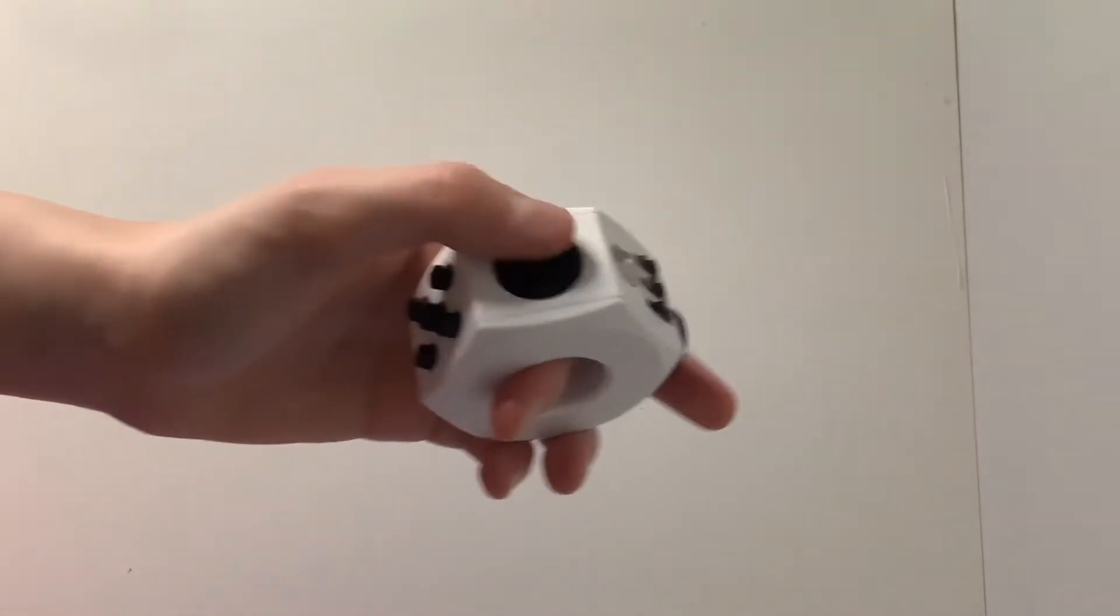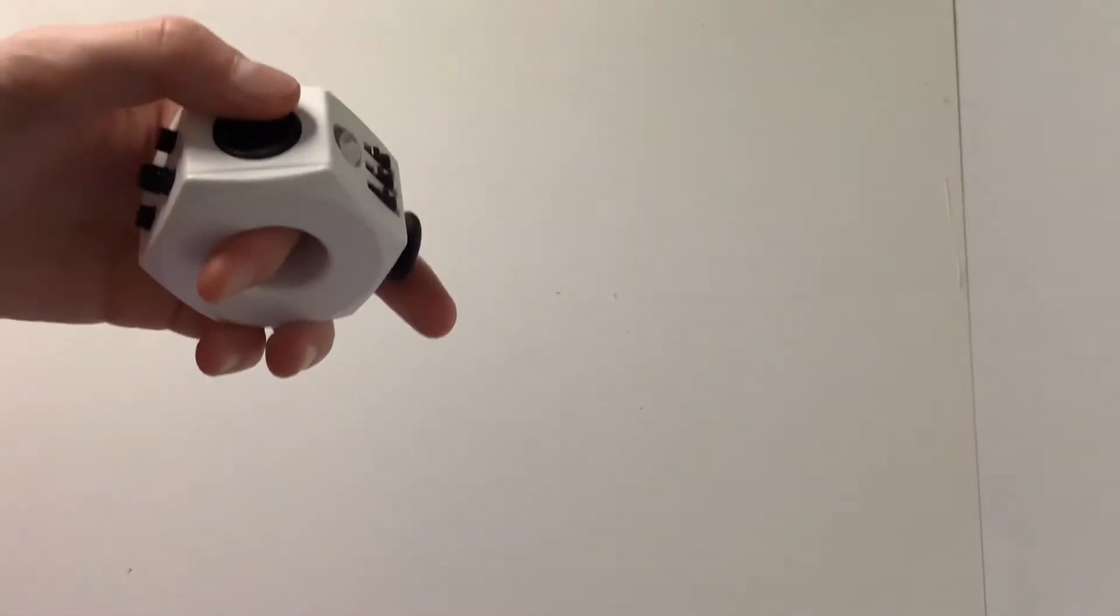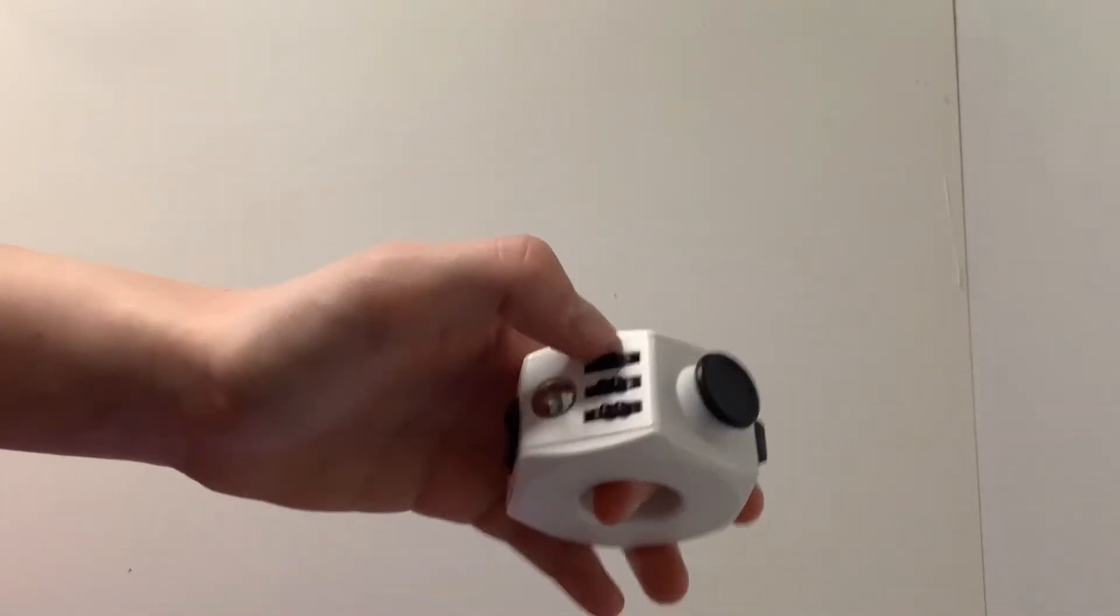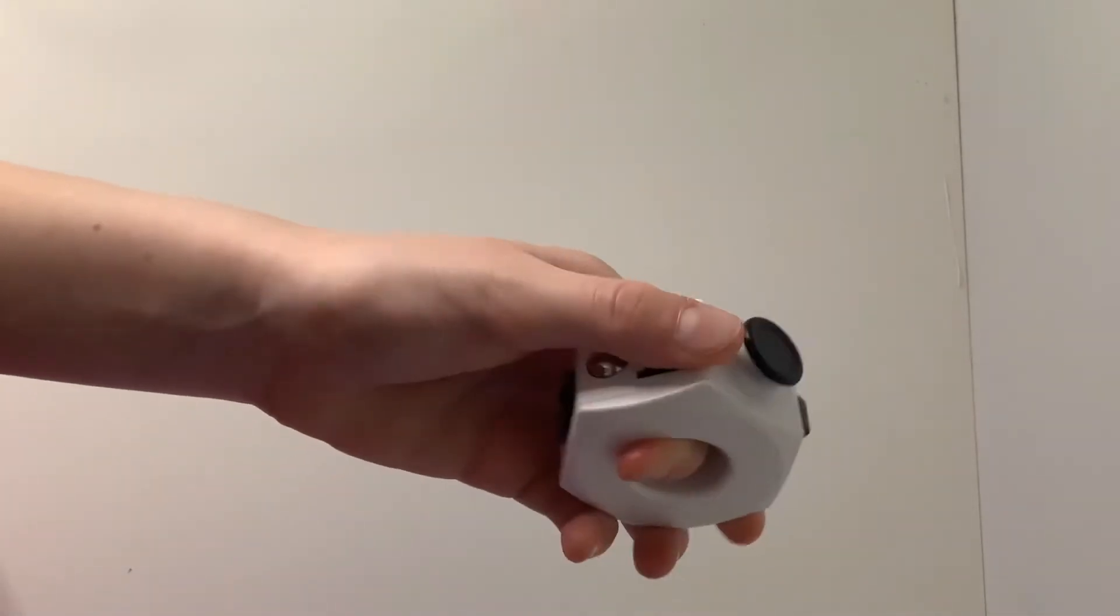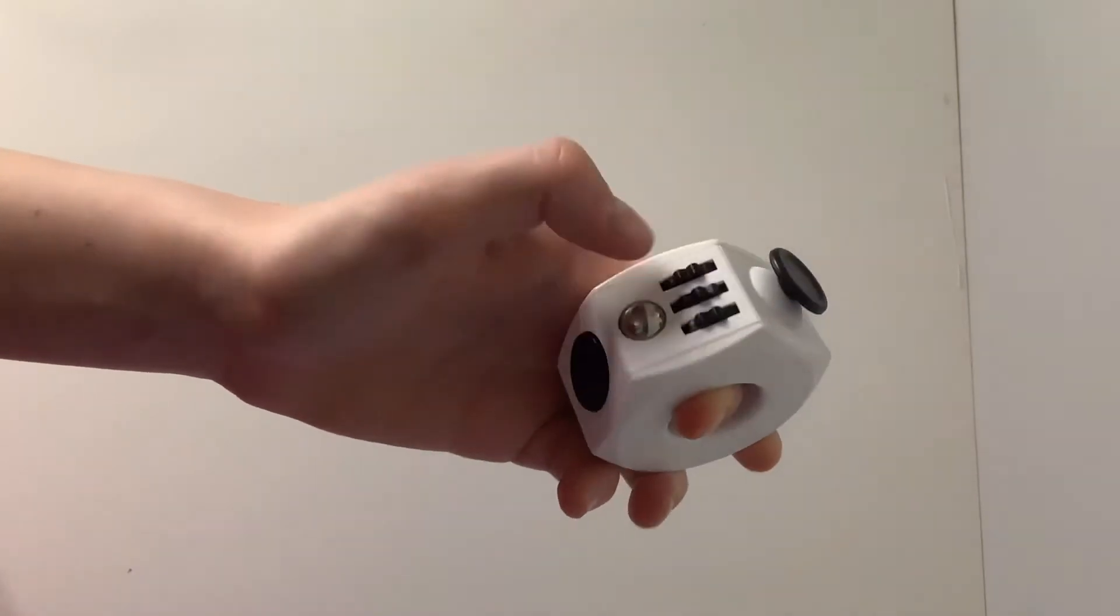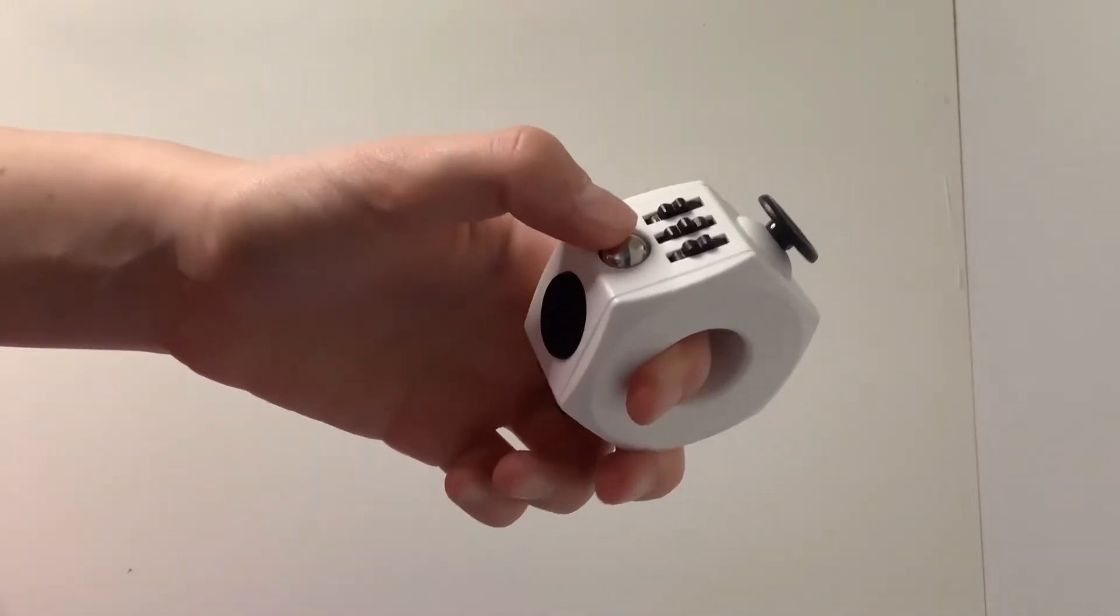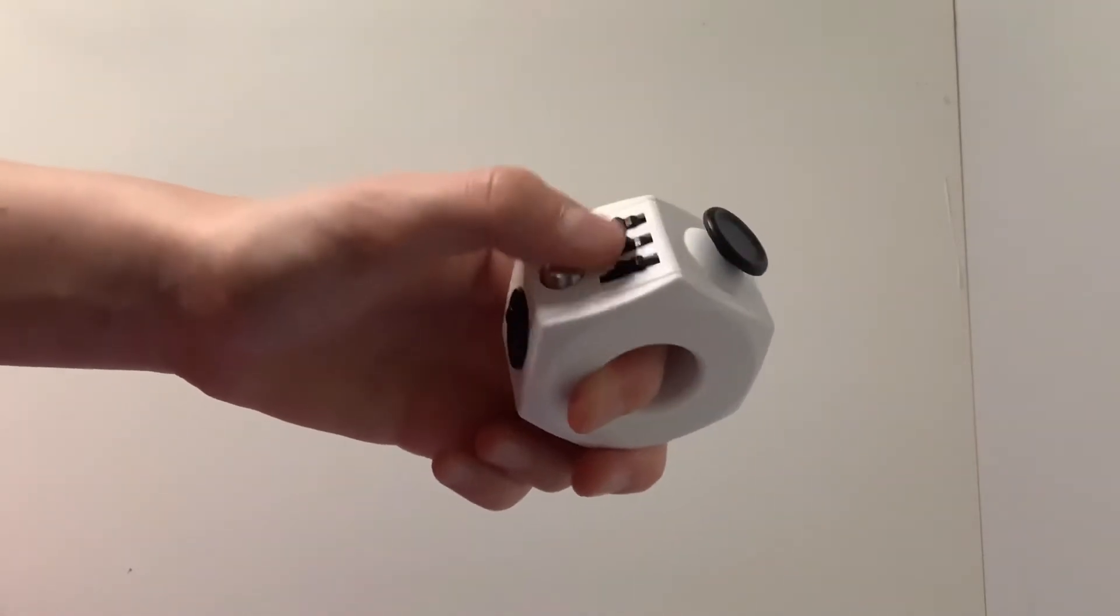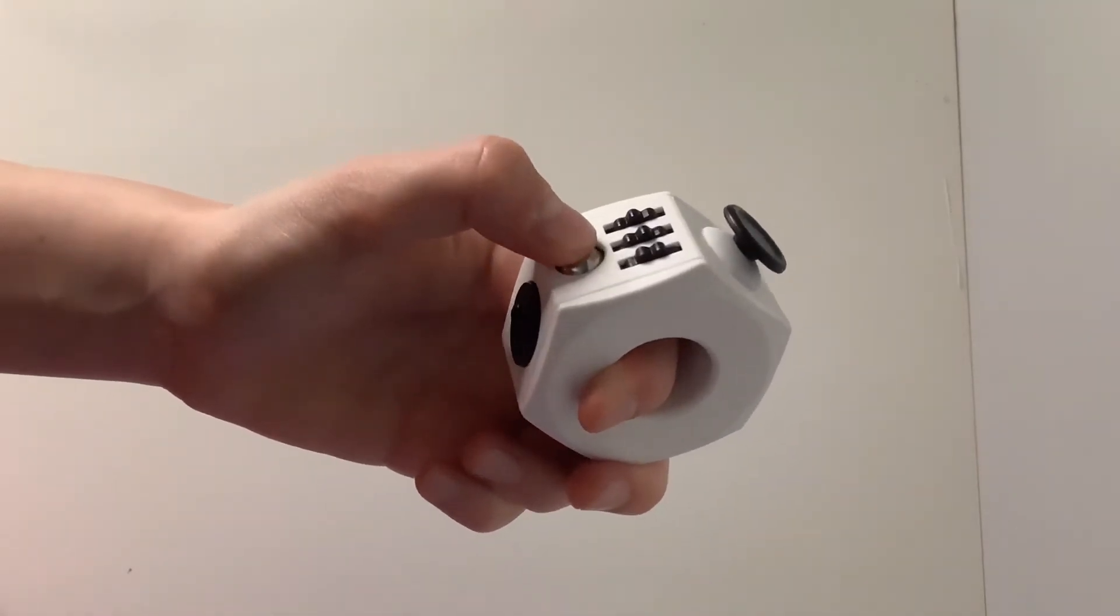Then you have the little turntable, also kind of use it like a switch. That one is my favorite of the three I'll be showing you for this part. And then you have little gears you can turn, and then like a little metal ball thing that you can roll. You can also press it in.